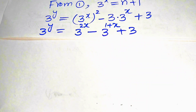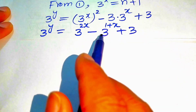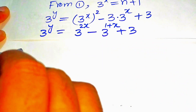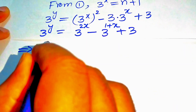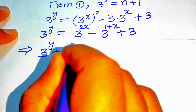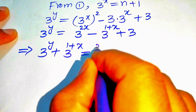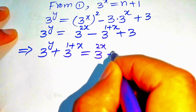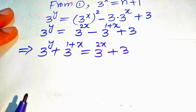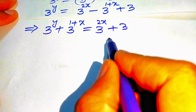Rearranging by moving the minus 3 to the power of 1 plus x to the left side, we get: 3 to the power of y plus 3 to the power of 1 plus x equals 3 to the power of 2x plus 3. We now convert this into two cases.